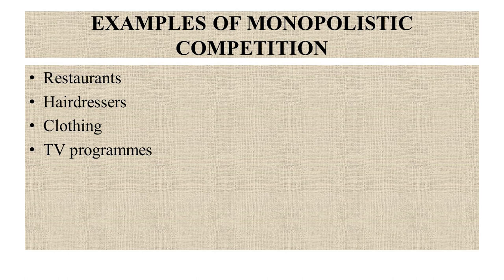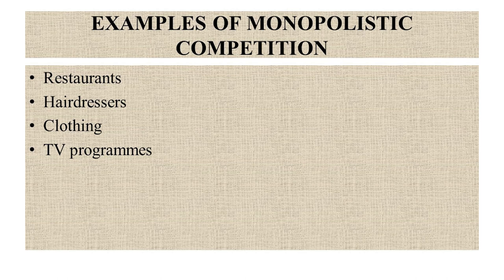Moving on to clothing, which is another example of monopolistic competition — designer label clothes are about the brand and product differentiation. And finally, TV programs: through globalization, the diversity of TV programs from networks around the world has increased. Consumers can choose between domestic channels but also imports from other countries and new streaming services.